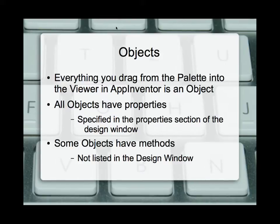Everything that we have in App Inventor on the palette — even if we can't see it, even if it's a non-visible component — every one of those are types of objects. We drag every one of those objects onto the viewer. When we're dragging an object onto the viewer, we are creating an instance of an object. All those things on the left are types of objects, and once it's in our viewer, it's an instance of that kind of object.